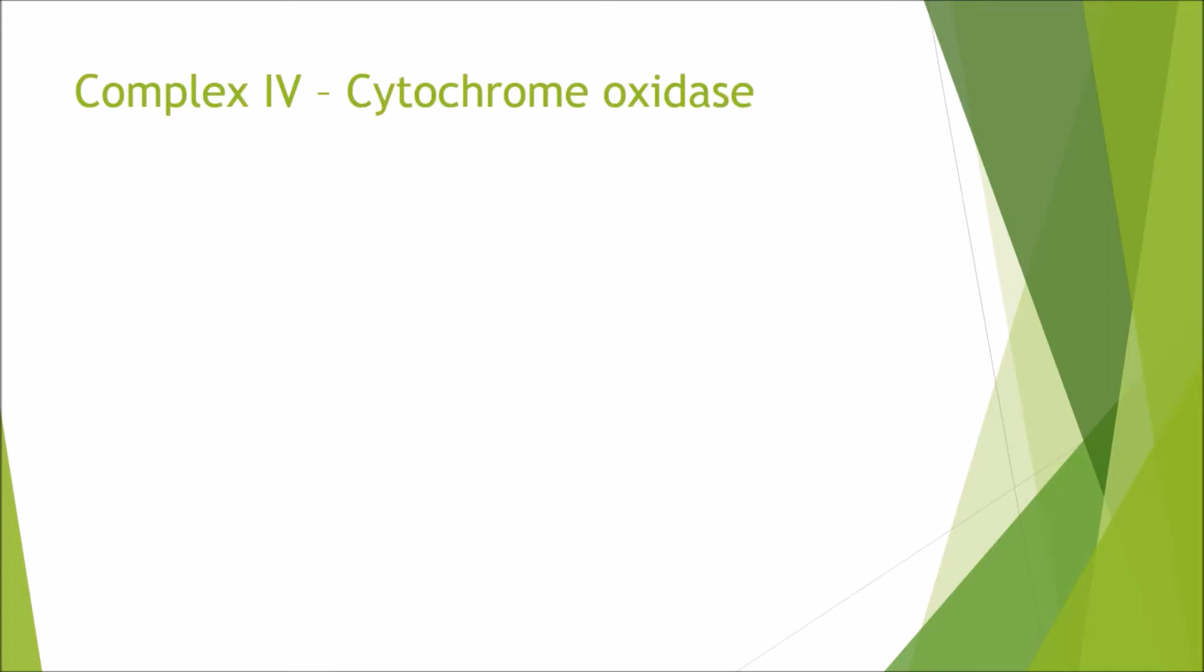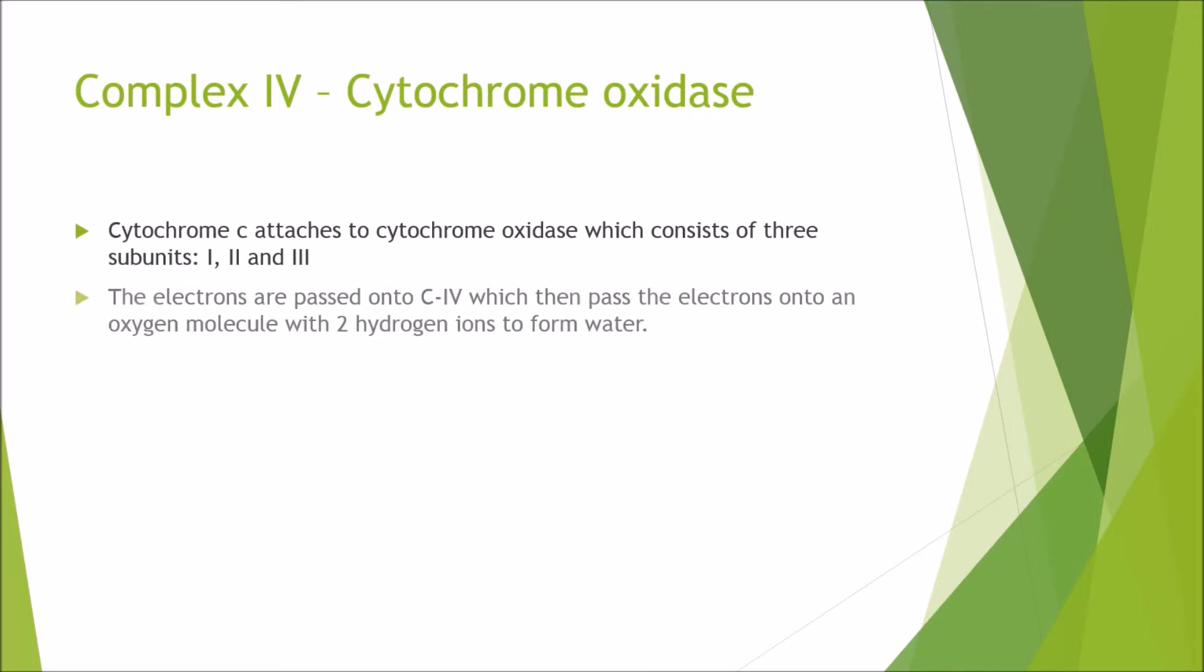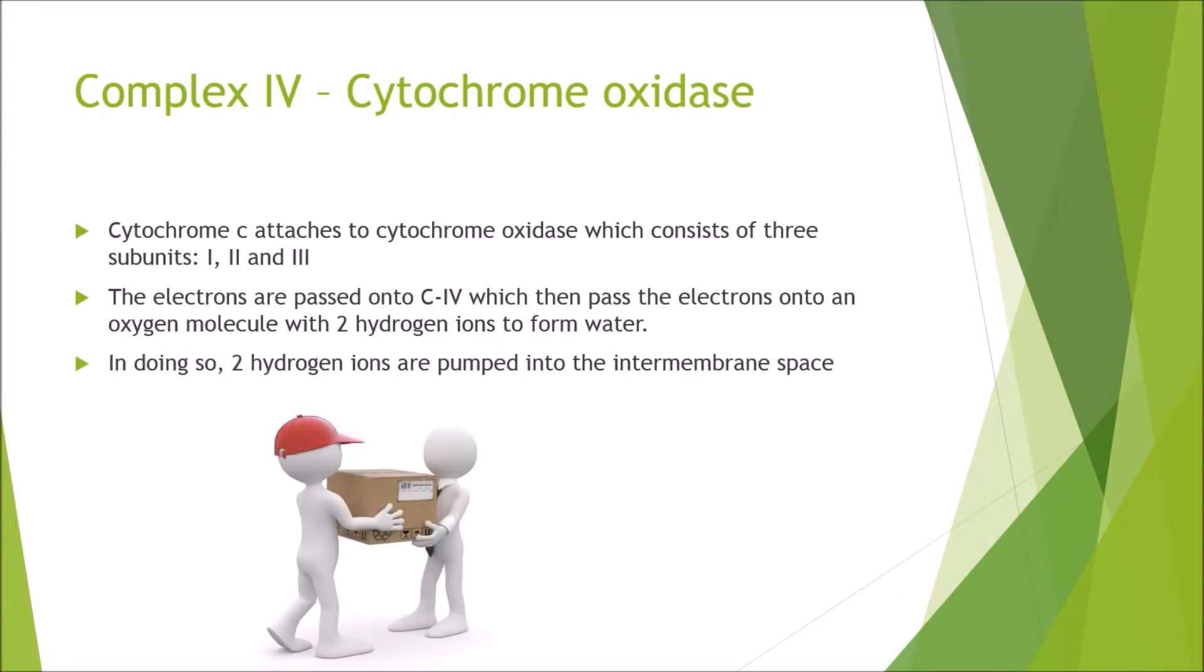Complex 4, cytochrome oxidase. Cytochrome C attaches to cytochrome oxidase, which consists of three subunits: one, two, and three. The electrons are passed onto complex 4, which then pass the electrons onto an oxygen molecule with two hydrogen ions to form water. And again, in doing so, the final two hydrogen ions are pumped into the intermembrane space. So now the parcel is finally being delivered to oxygen, which is the final acceptor.